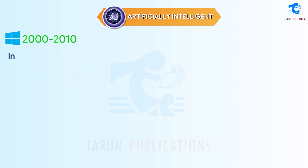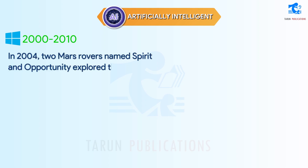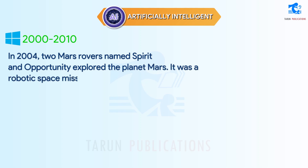In 2004, two Mars rovers named Spirit and Opportunity explored the planet Mars. It was a robotic space mission called the Mars Exploration Mission of NASA.